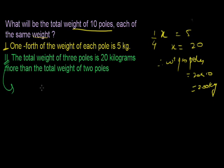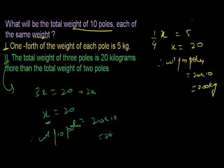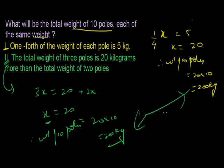Statement two: total weight of three poles is 20 kg, meaning 3X equals 20, so X equals 20/3 — wait, the weight of two poles gives 2X, and X works out to give the weight of one pole. The total weight of 10 poles is again 200 kg. Yes, I'm getting the answer from statement two alone as well. By chance the answers match, but what matters is getting the answer. Both statements independently give the answer, so the answer is option C.